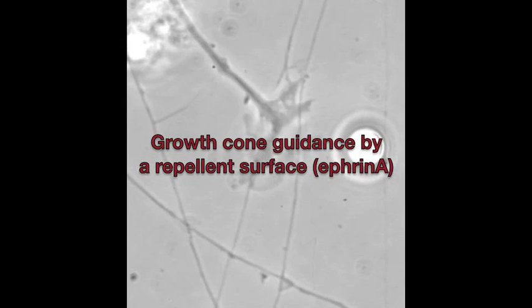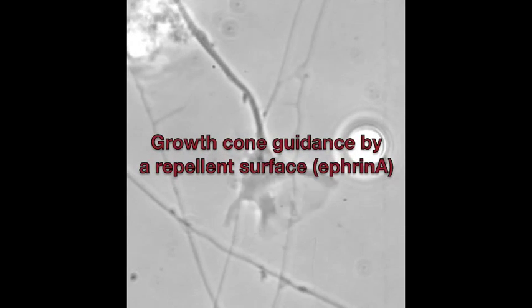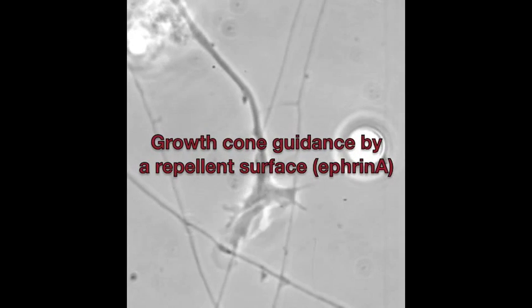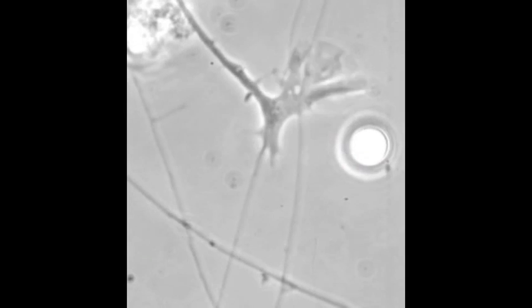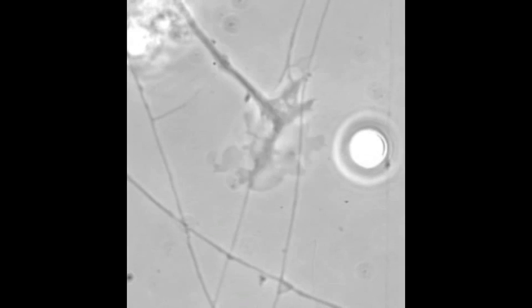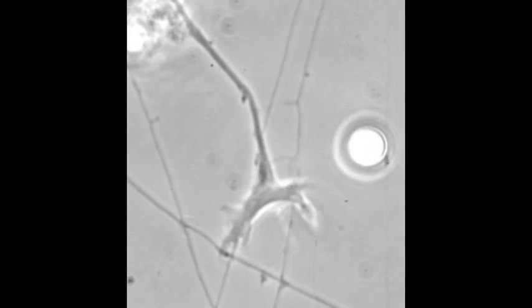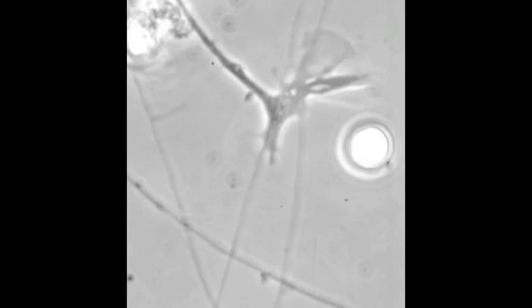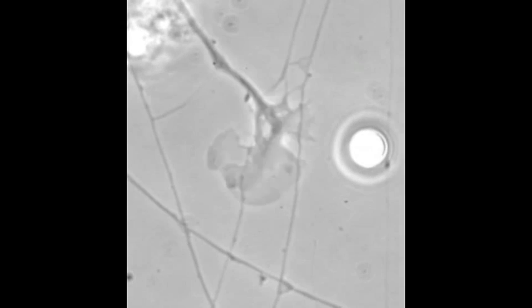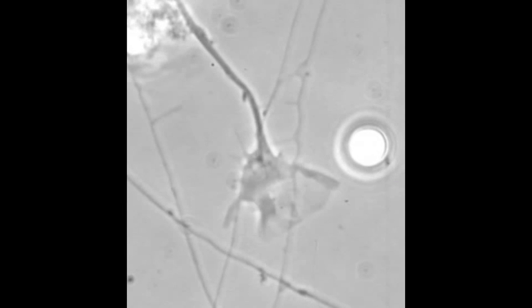In this movie, a temporal retinal growth cone avoids a bead bearing the repellent molecule Ephrin A2. Two filopodial contacts induce the growth cone to turn sharply away.